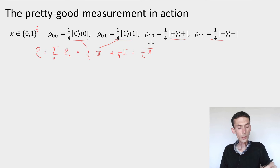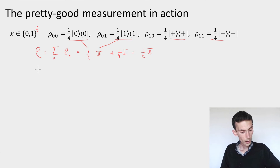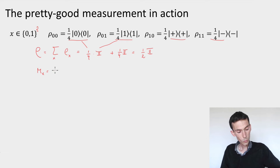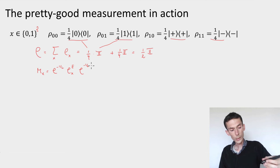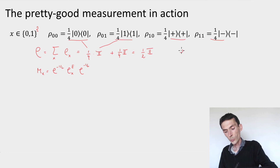Now, remember the definition of the measurement operators for the pretty good measurement. I need to define M_x to be equal to ρ^(-1/2) times ρ_x times ρ^(-1/2). So here, let me compute ρ^(-1/2). It's simply going to be equal to √2 times the identity.